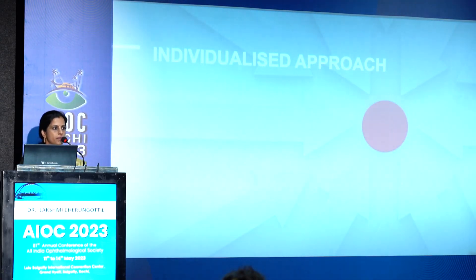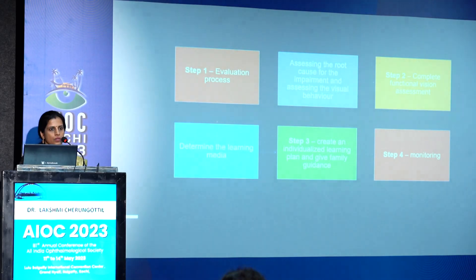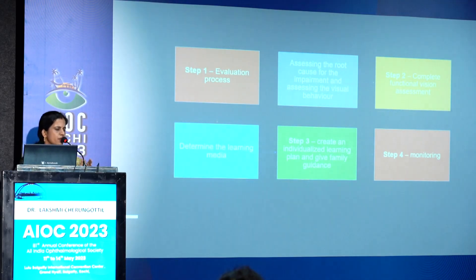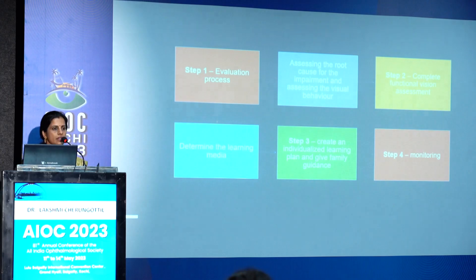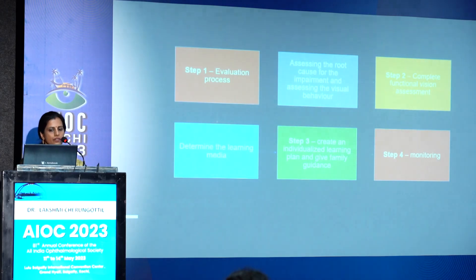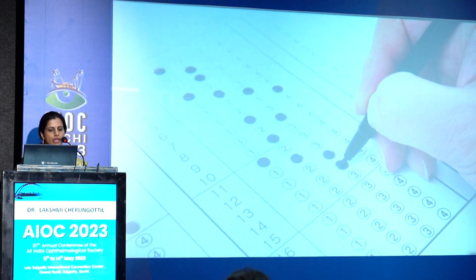After all treatable causes have been addressed, we need an individualized approach. There is a lack of uniformity in assessment programs, leading to some vagueness. The CVI Scotland group has come up with a four-step process: first, evaluate; second, assess functional vision; third, create an individualized plan; and fourth, monitor.